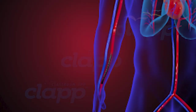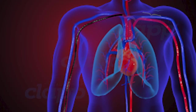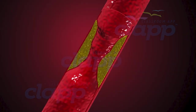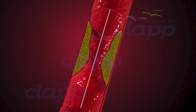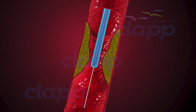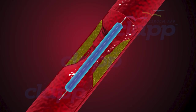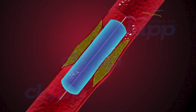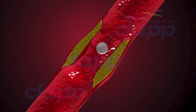Guiding catheters are skillfully maneuvered through the arteries, providing a stable pathway for other devices and ensuring precise navigation and accurate placement at the site of the blockage. Once the guiding catheter is in place, a balloon catheter is advanced to the targeted area. The balloon catheter consists of a thin tube with an inflatable balloon at its tip, carefully positioned within the narrowed artery. Once inserted into the blocked artery, the balloon is gently inflated with utmost precision, compressing the plaque against the artery walls, widening the vessel and restoring proper blood flow to the heart.